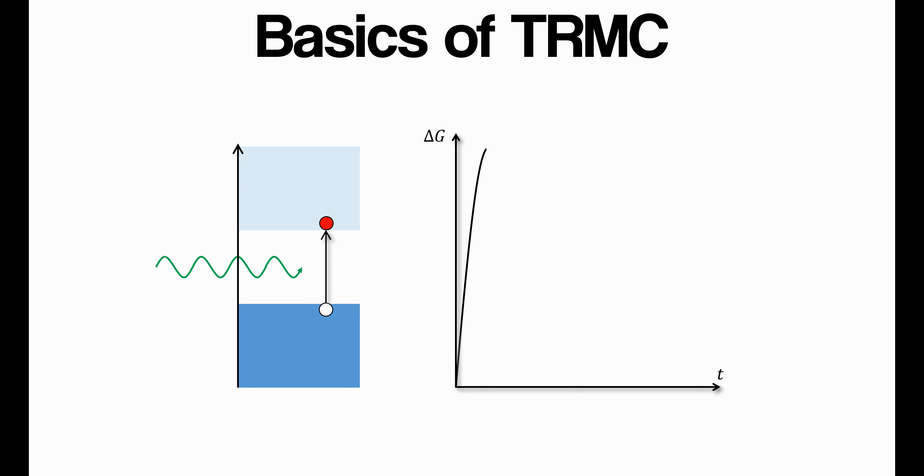When the pulse of light hits the sample, we'll see this increase in conductance. Then when the pulse terminates, carriers recombine and we get a reduction in conductance. So a time-resolved microwave conductivity experiment encapsulates quite a lot of information.